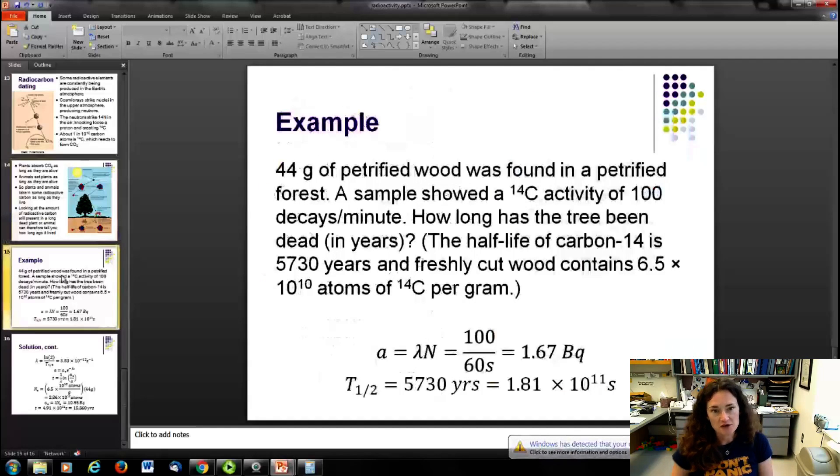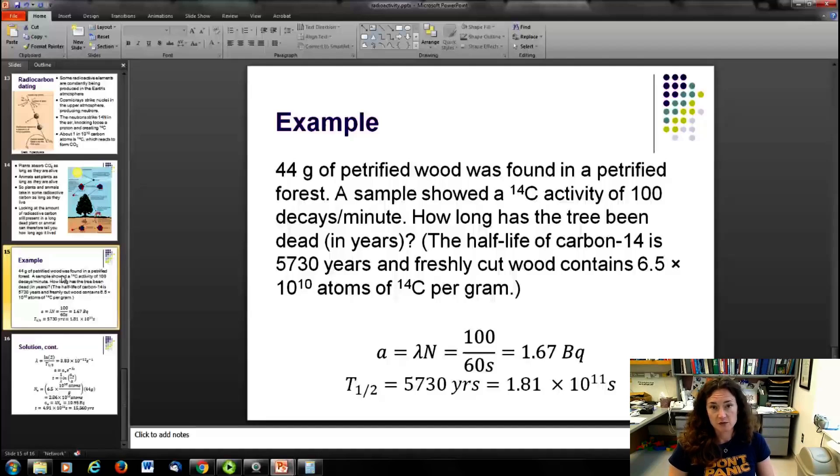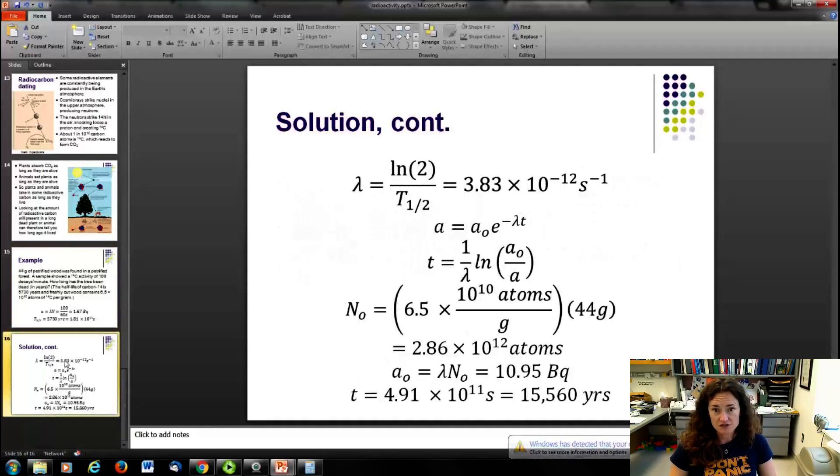So to give an example of that, 44 grams of petrified wood was found in a petrified forest and the sample showed a carbon-14 activity of 100 decays per minute. So how long has the tree been dead in years? The half-life of carbon-14 is 5,730 years and freshly cut wood contains about 6.5 times 10 to the 10th atoms of carbon-14 per gram. So those are all the information that you'll need to solve. Now, our activity has been given as 100 decays per minute, a minute 60 seconds, which makes our activity 100 divided by 60 or 1.67 becquerels. Now, our half-life was given in years, so let's convert that to seconds. 5,730 years is 1.8 times 10 to the 11th seconds. Calculating our decay constant, then, natural log of 2 divided by our half-life gives us 3.8 times 10 to the minus 12 inverse seconds for our decay constant.